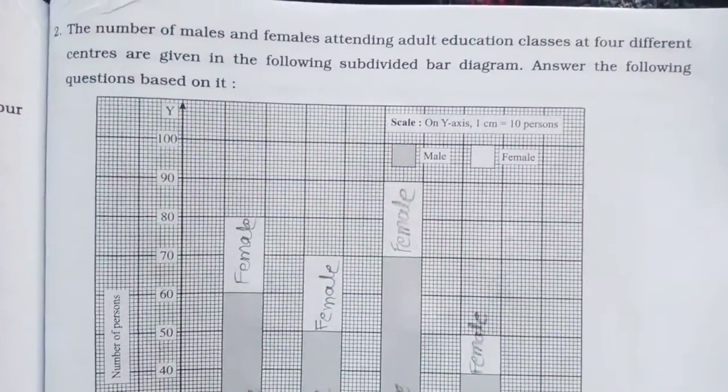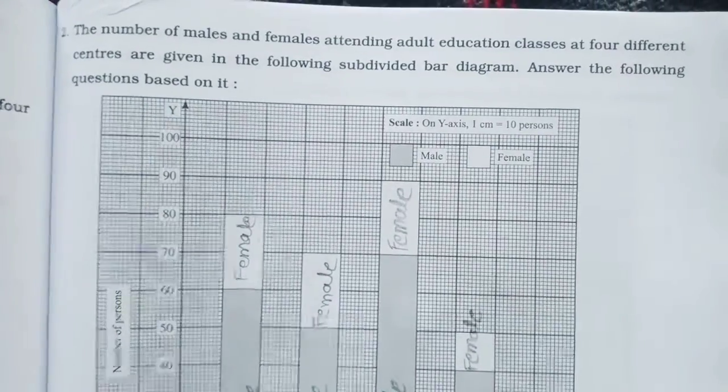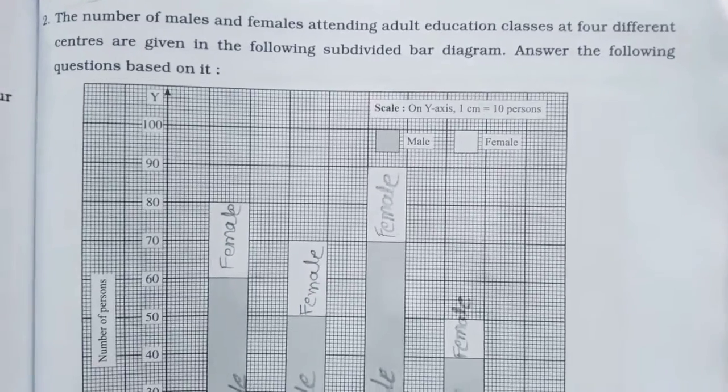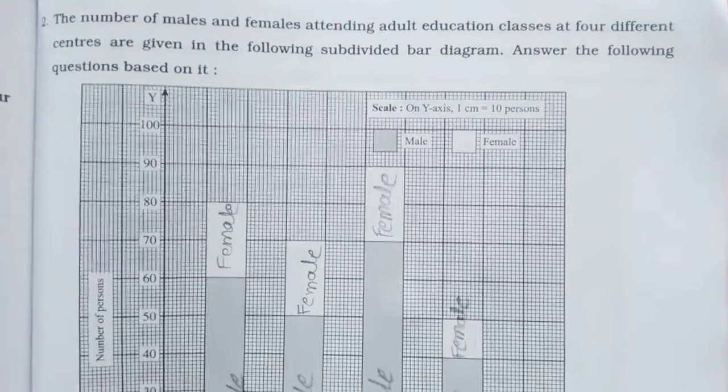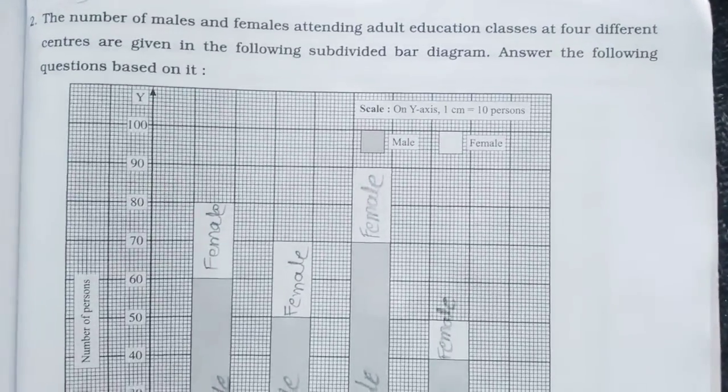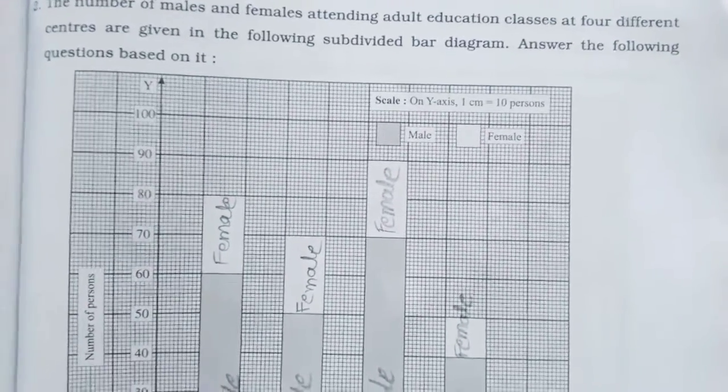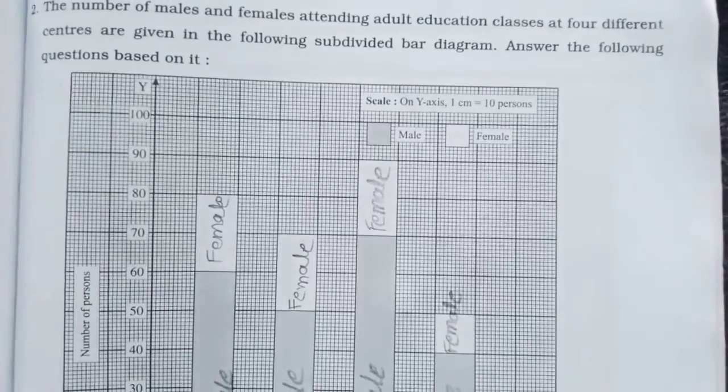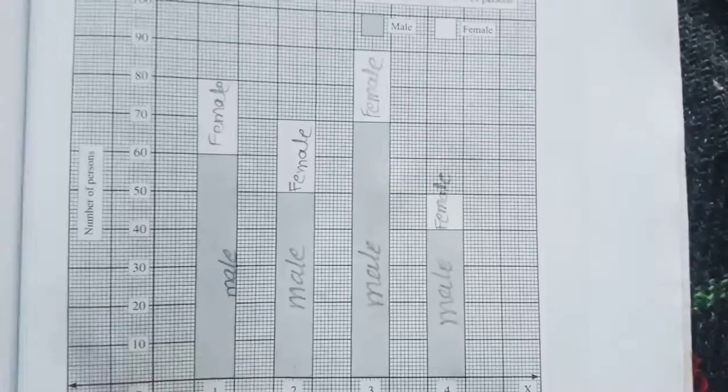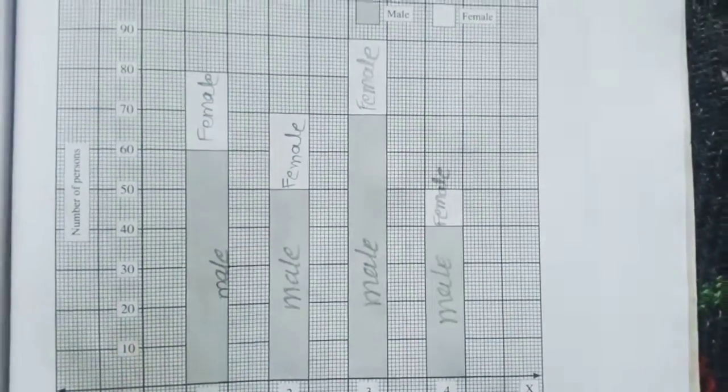The number of male and female attending adult education classes at four different centers are given in the following subdivided bar diagram. Answer the following question based on it. Scale दिली आहे on y-axis 1 cm 10 persons and male, female number of persons.